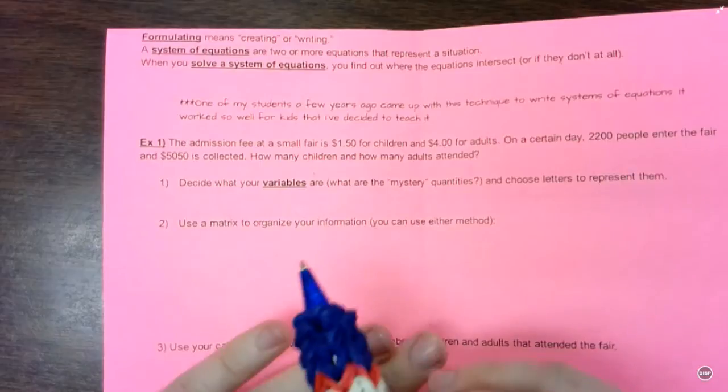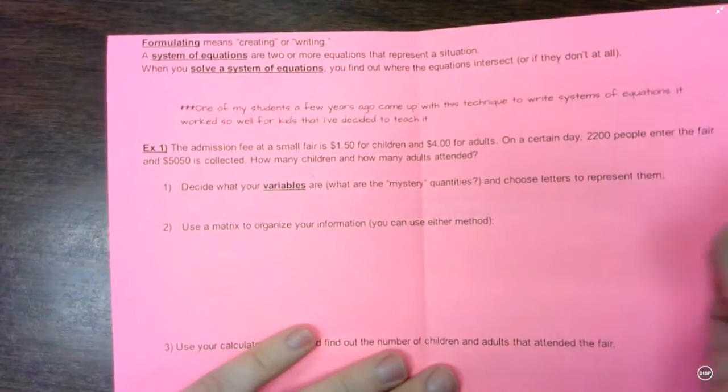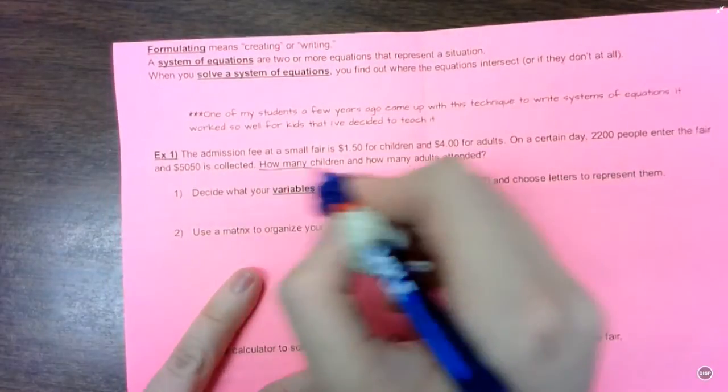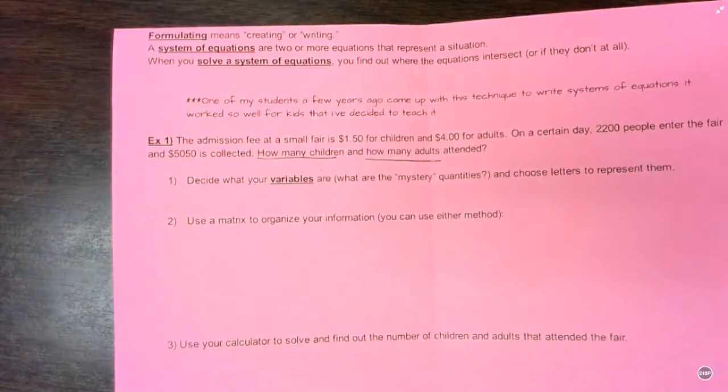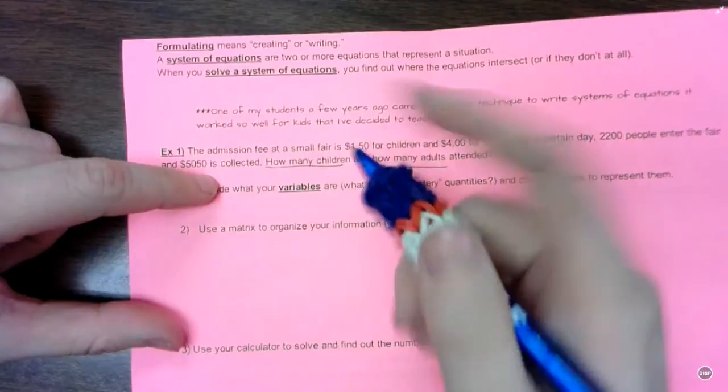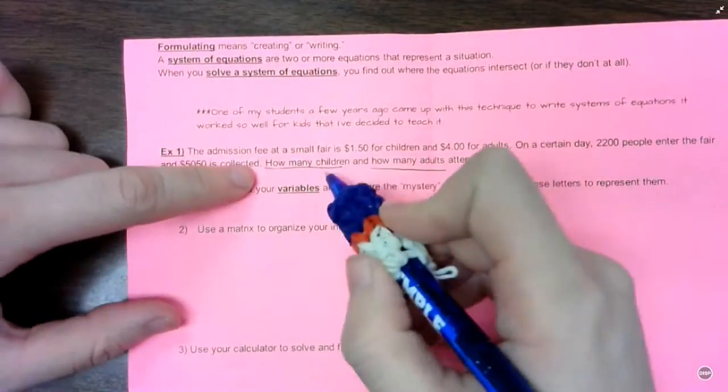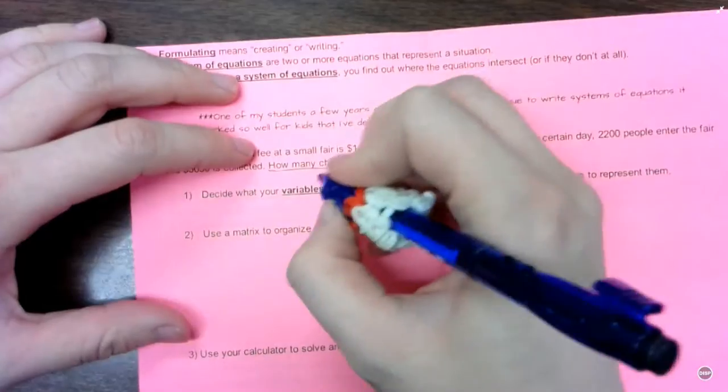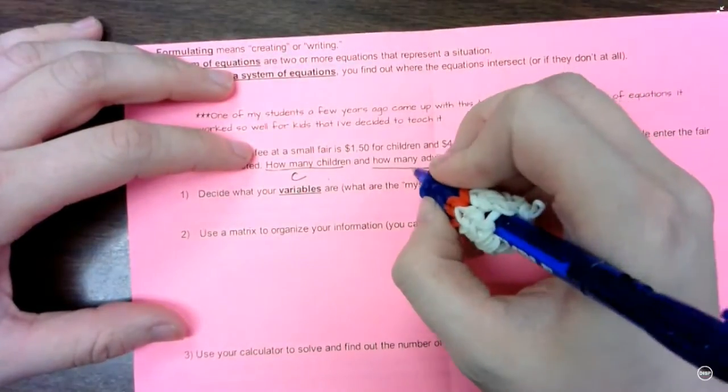So if we want to write a system of equations and solve it to represent the situation and figure out how many children and how many adults, first thing we need to do is decide what our variables are. It's what we're looking for. And in this case, we're looking for how many children attended and how many adults attended.